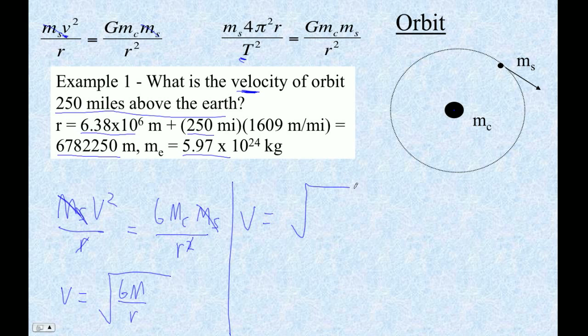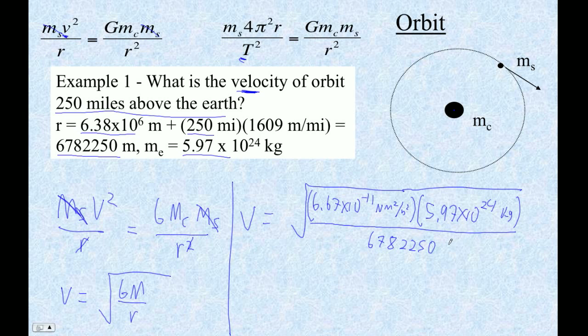So now it's time to type numbers in. Velocity is the square root of 6.67 times 10 to the minus 11th - that's Newton meters squared over kilograms squared. And then the mass is 5.97 times 10 to the 24th kilograms. And then R is this number here: 6,782,250 meters.